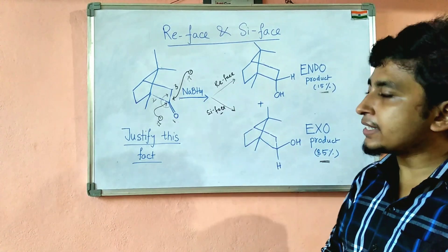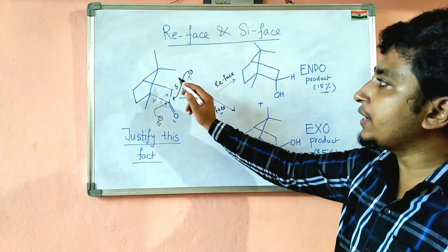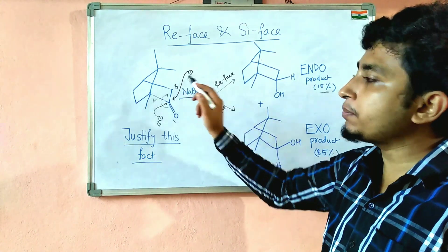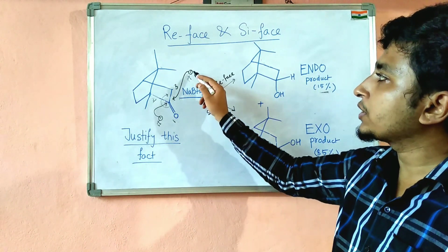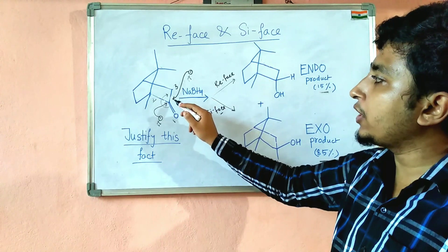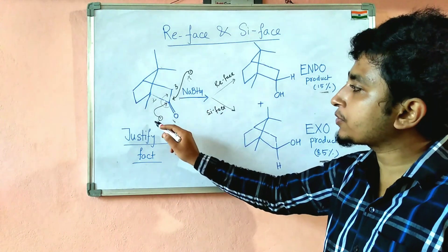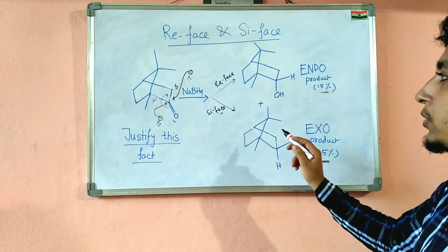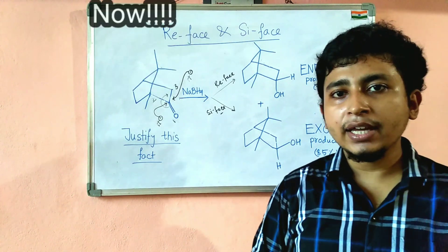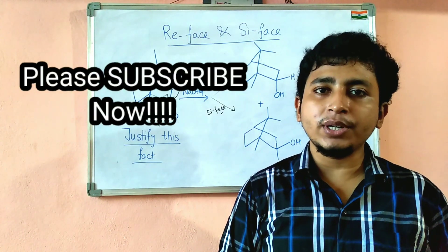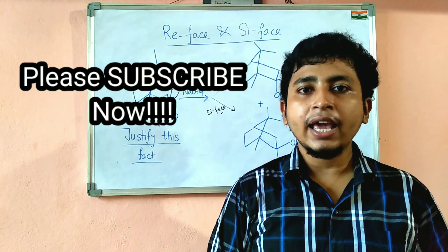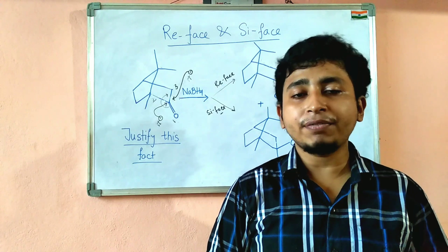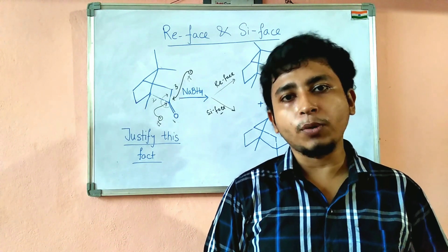In this case, the Re-face attack is hindered because of steric crowding — you can see a 2-methyl group is present, causing steric crowding on that position. Therefore, the H⁻ attack will not take place from the above side in major amount; it will predominantly occur from the below side. Hence, we get the exo-product as the major product (85%). Hope you understand this logic. Thank you for watching — please like, comment, and subscribe to this channel, share with your friends, and press the bell icon for further notifications.